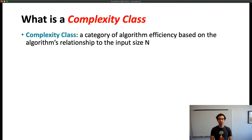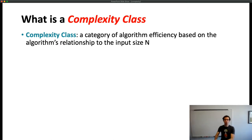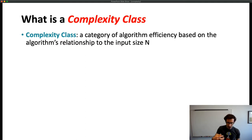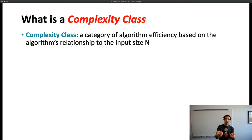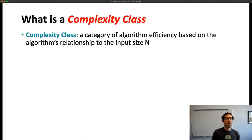A complexity class is a category of algorithm efficiency based on a relationship with the input size. If our code is dealing with a list that has n elements, the input size is n — and the relationship we're trying to draw is how much work the code has to do in relation to the amount of input it's dealing with.